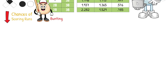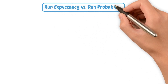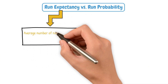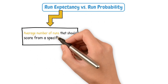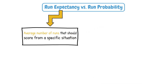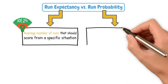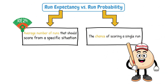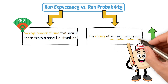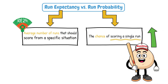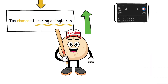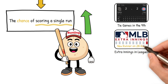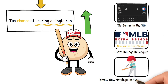Let's talk about run expectancy versus run probability. Run expectancy tells you the average number of runs that should score from a specific situation — that's what we're applying with RE24. Run probability tells you the chance of scoring a single run. Yes, bunting can slightly increase the probability of scoring one run occasionally. That's why you still see it in tie games in the ninth, extra innings with the new runner-on-second rule, and playoff-like small ball environments.